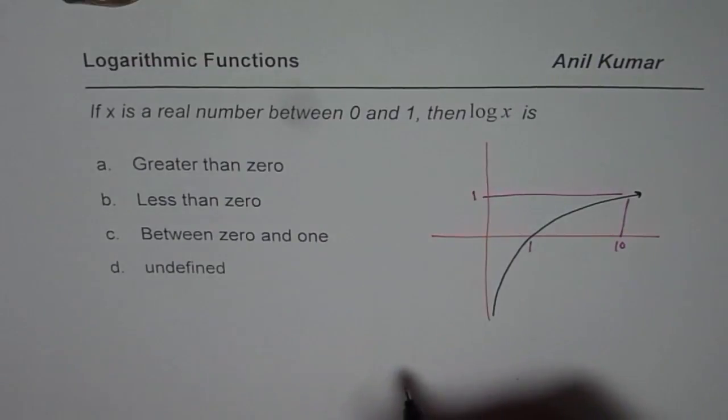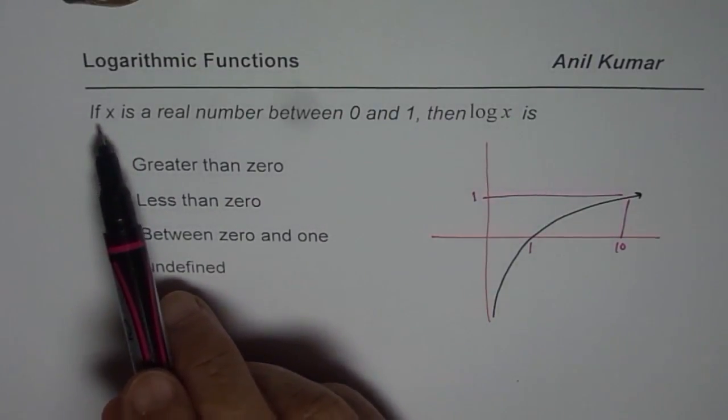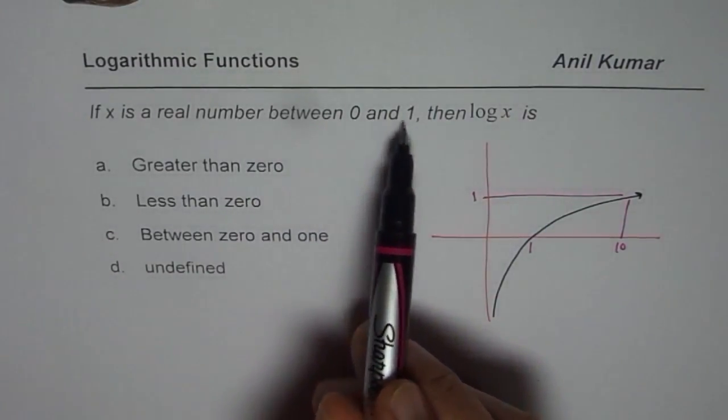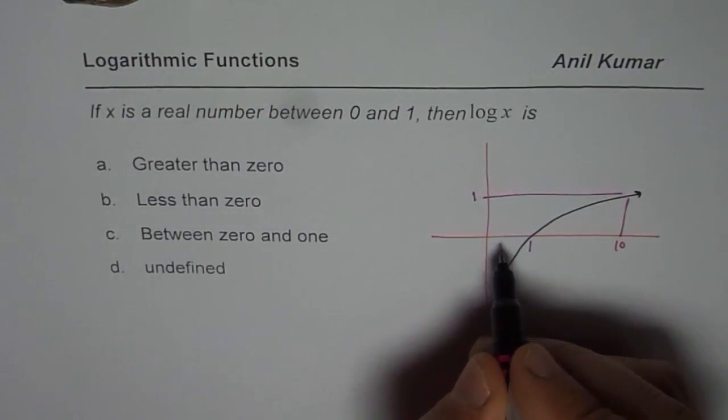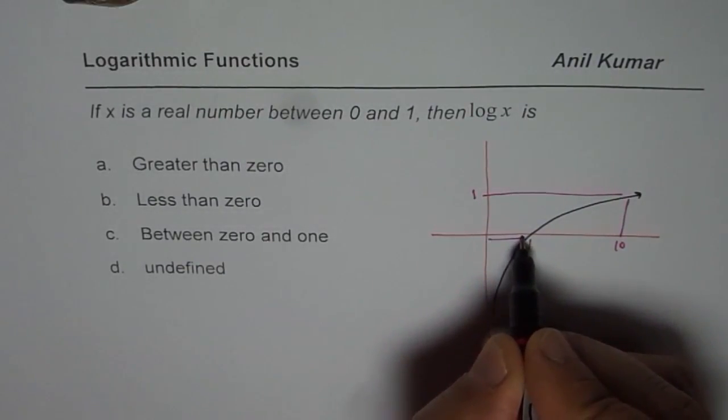at 10 it is going to be 1. Now it says, if x is a real number between 0 to 1, so if x is between 0 to 1, somewhere here,